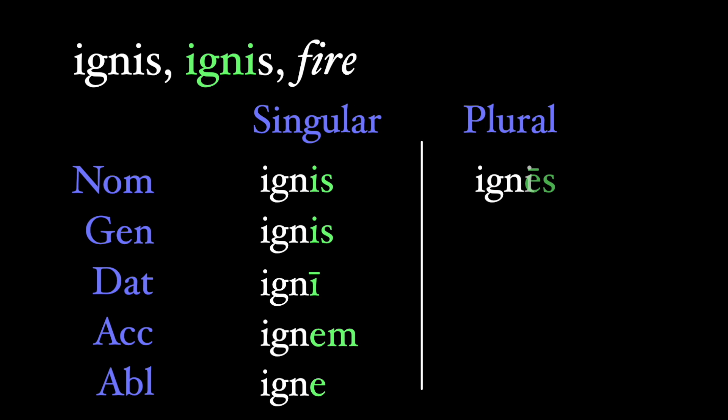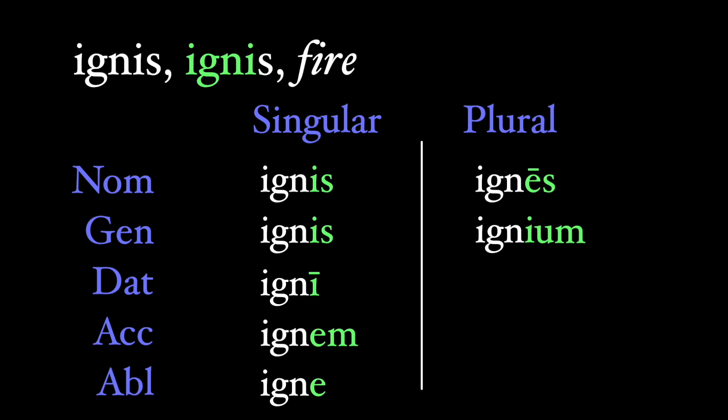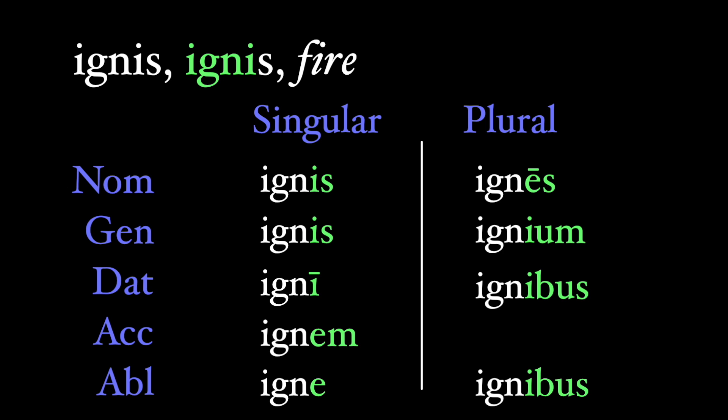In the plural, I-stems have the standard es nominative ending. We retain the stem of the I in the genitive plural, however. So of the citizens would be civium, and of the enemies, hostium. The dative and ablative plurals are the standard ibus, but the accusative plural was originally the is, not the es of the third declension consonant stems. And we see this through even the time of Cicero and Caesar. Only when we move into the new millennium and the Roman Empire does this is form give way to the now more standard es.